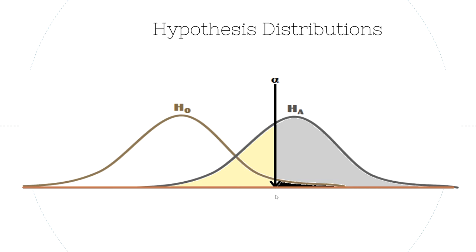If you were to slide this alpha so that you commit that error less of the time, you would also end up missing cases in the alternate distribution. The further you slide the threshold to the right, the more of the alternate also fails to meet your threshold. So it's a balancing act, and it's really hard to say what matters more. Is it worse to throw out the cure for cancer — concluding the null is true when it was really false, a type two error — or is it worse to tell the world you found the cure for cancer when you really didn't? Those are the two types of errors you could make, and both are very unfortunate.